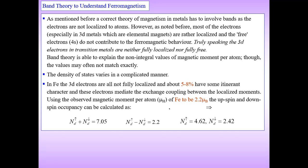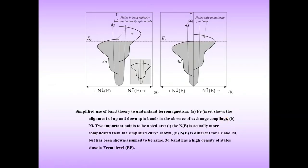The density of states varies in a complicated manner in Fe, and the 3d electrons are not fully localized — about 5 to 8 percent have some itinerant character. These electrons mediate the exchange coupling between localized moments. The observed magnetic moment per atom of Fe is 2.2 µB, with spin-up and spin-down occupancies summing accordingly.